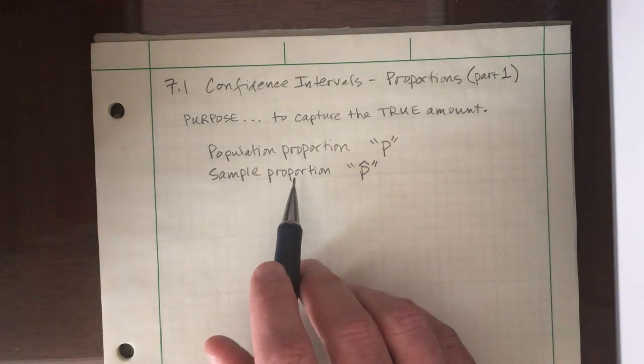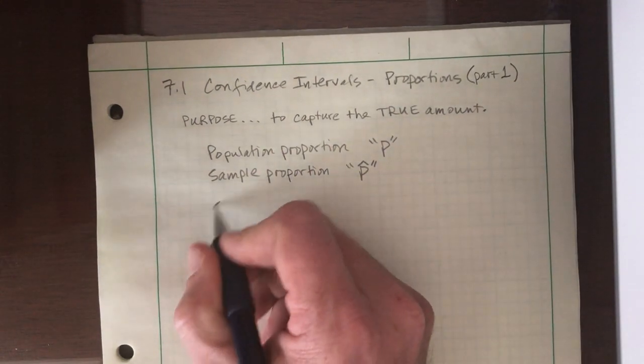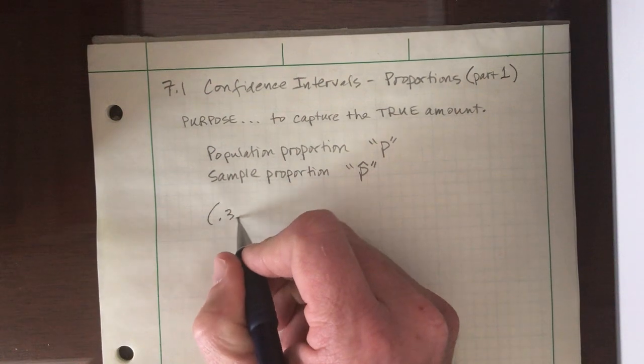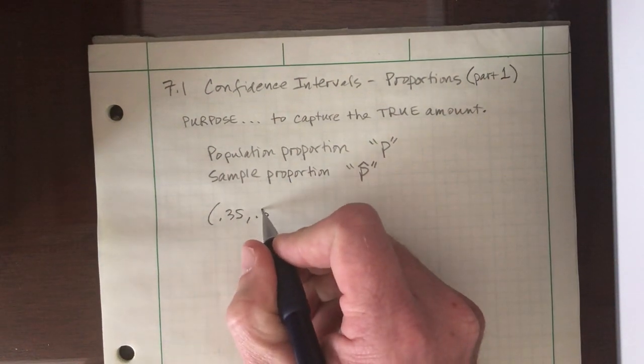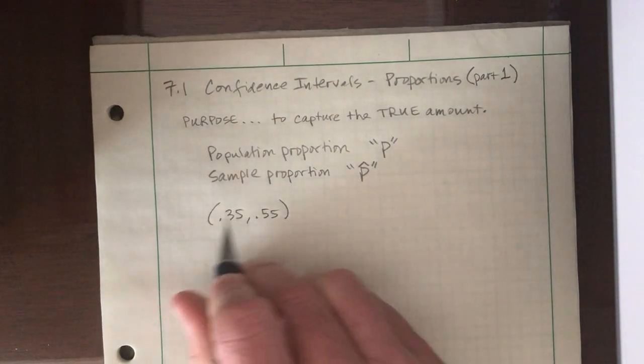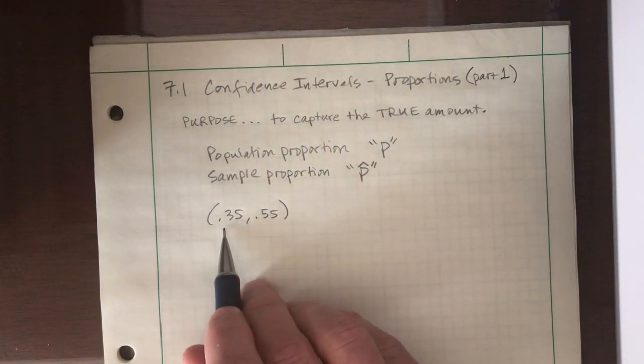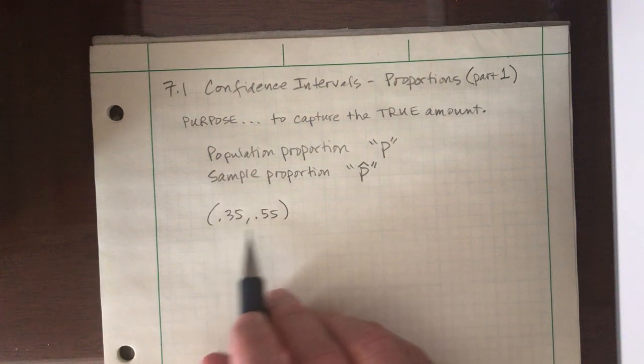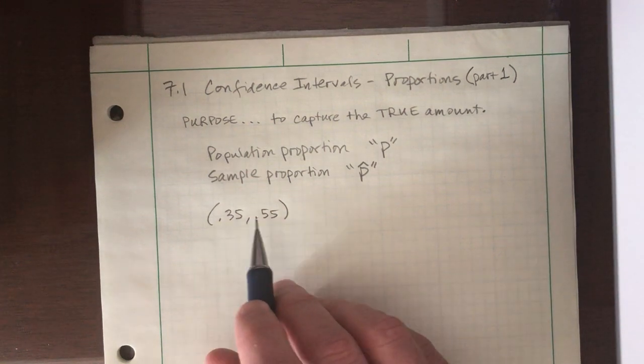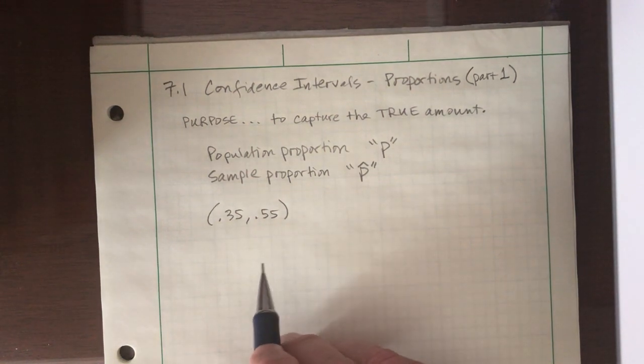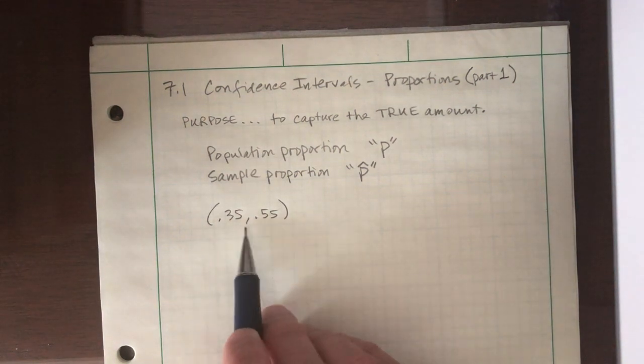You may remember in the introductory video, I gave a confidence interval that looked like this: 35, 55. So as proportions, they have the decimals. If I want to call that as percentages, I would call that 35% to 55%.